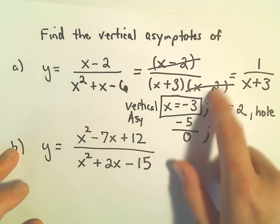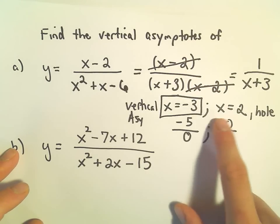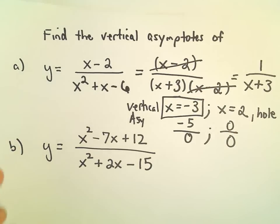Because you've already kind of gotten rid of these common factors, so you're getting rid of those values of x that would give you 0 over 0.